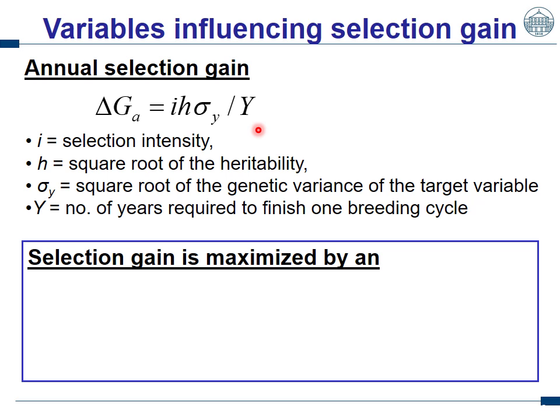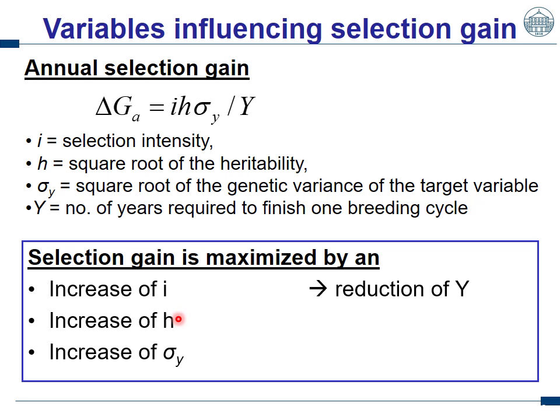It is quite easy to know how selection gain is maximized. Naively, we have to increase the selection intensity (i), heritability (h), or the genetic standard deviation (sigma), or we have to reduce the number of years (y). Thus, we should have more intensive selection by testing more lines, a higher heritability by having more test locations, a higher genetic variance, or we speed up the breeding cycle. This is quite fundamental, but it will impact all our discussions in the next slides.